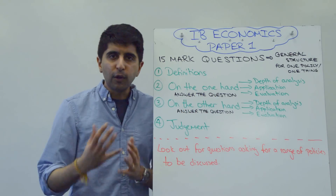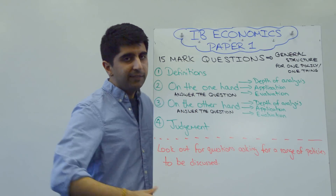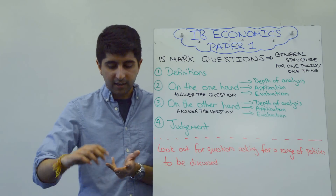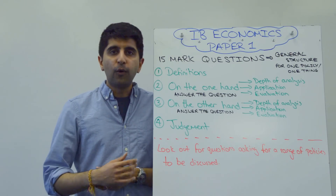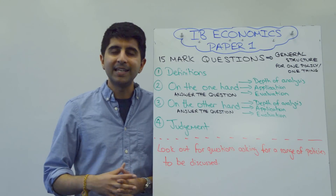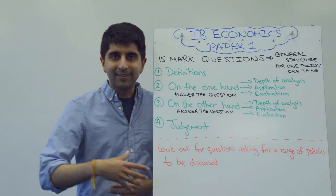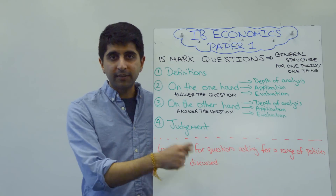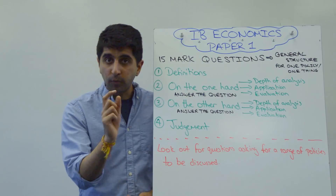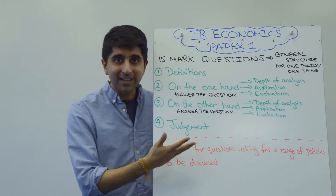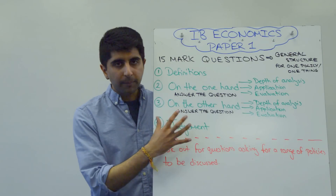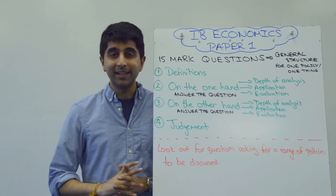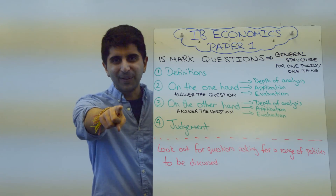Now this structure works for lots of different IB questions, but watch out: if you've got a question where you need to discuss a range of policies — maybe to solve market failure, promote economic growth, reduce unemployment, control inflation, or reduce poverty — watch my next video where I adapt this structure ever so slightly to help you answer questions like that. There isn't much of a change, but it's an important change. Practice especially under time conditions for your exam. Hopefully now you can be confident with 15-markers and do exactly what you need to score top marks. Thanks for watching — see you in the next video.